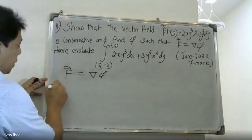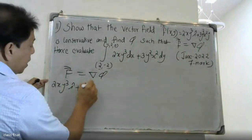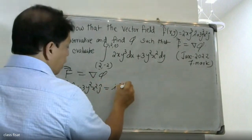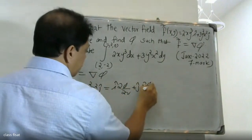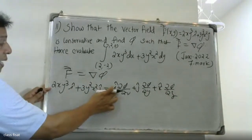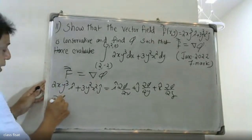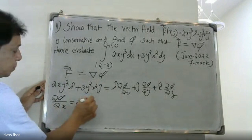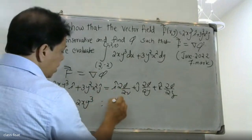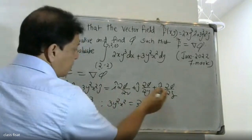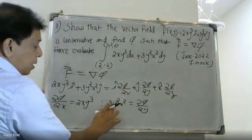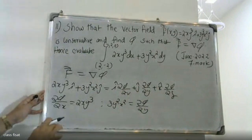Since the field is conservative, we find the scalar potential φ such that ∂φ/∂x = 2xy³ and ∂φ/∂y = 3y²x². Comparing components, ∂φ/∂x equals 2xy³ and ∂φ/∂y equals 3y²x².